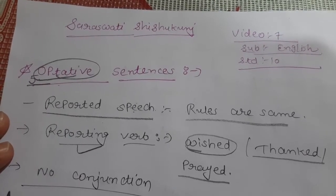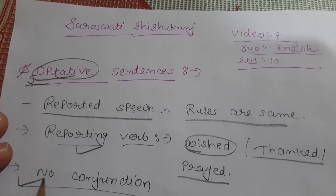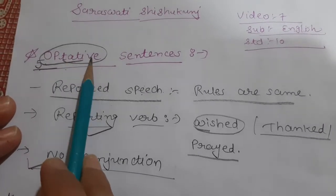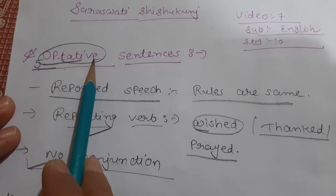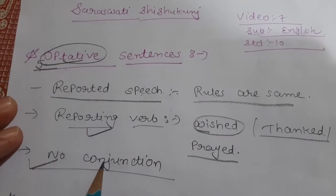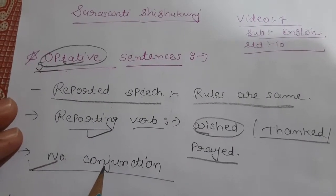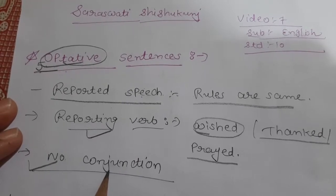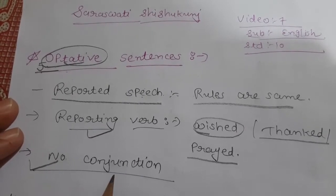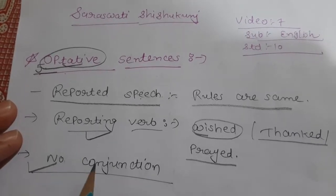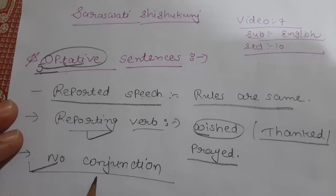Now, the main thing is there will be no conjunction at all in optative type of sentences. In all other sentences we have conjunction — either 'if,' 'whether,' a wh-word, 'that,' 'to,' 'not to,' or whatever. But in optative sentences there will be no conjunction.